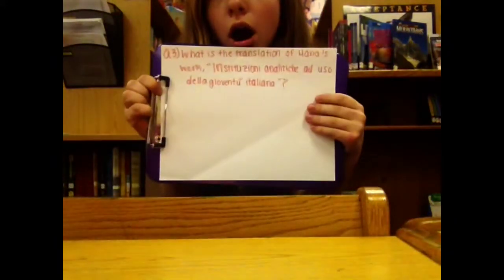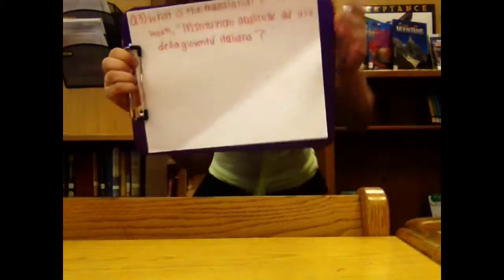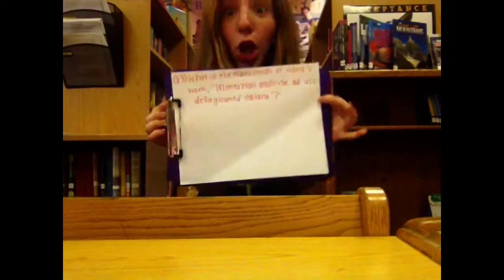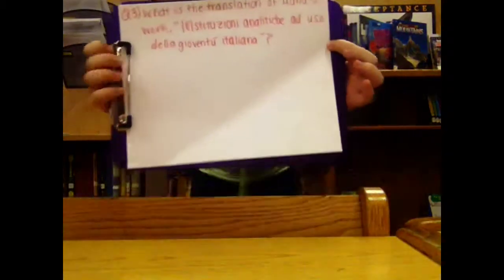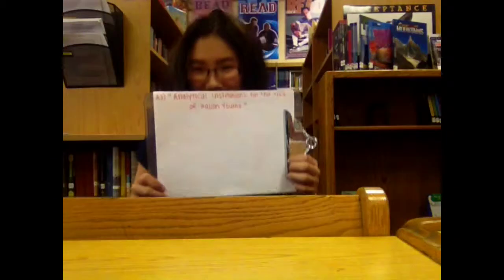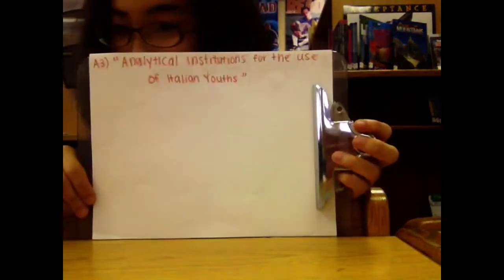Moving on to question number three. What is the translation of Maria's work? The answer is: Analytical Institutions for the Use of Italian Youths.